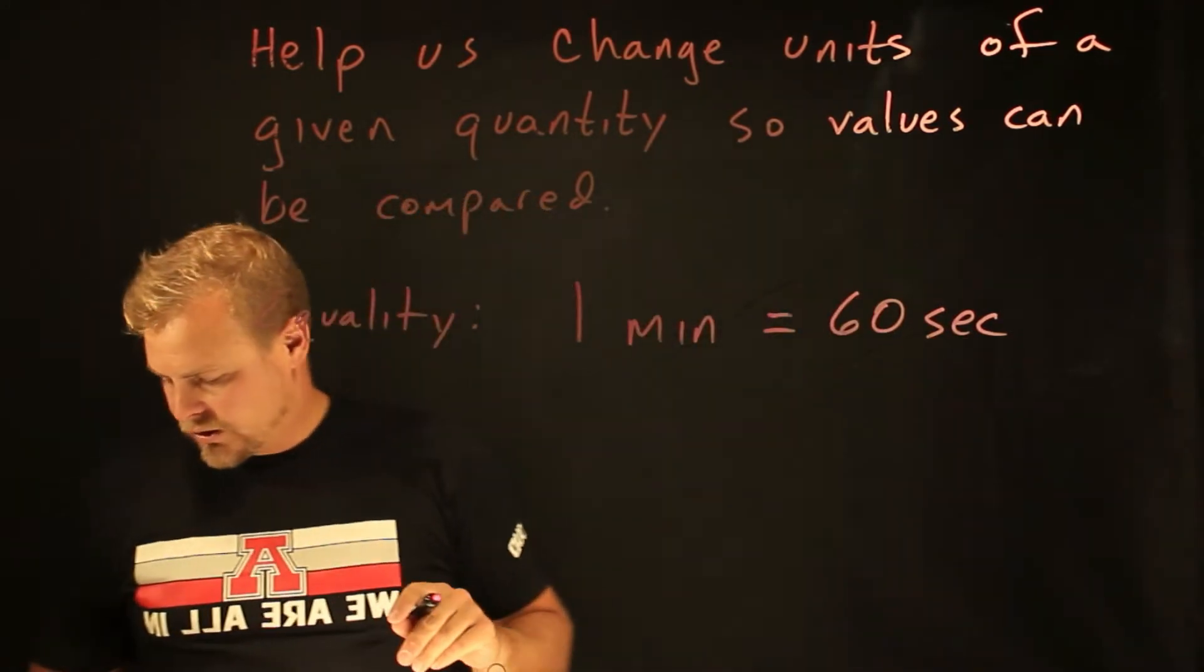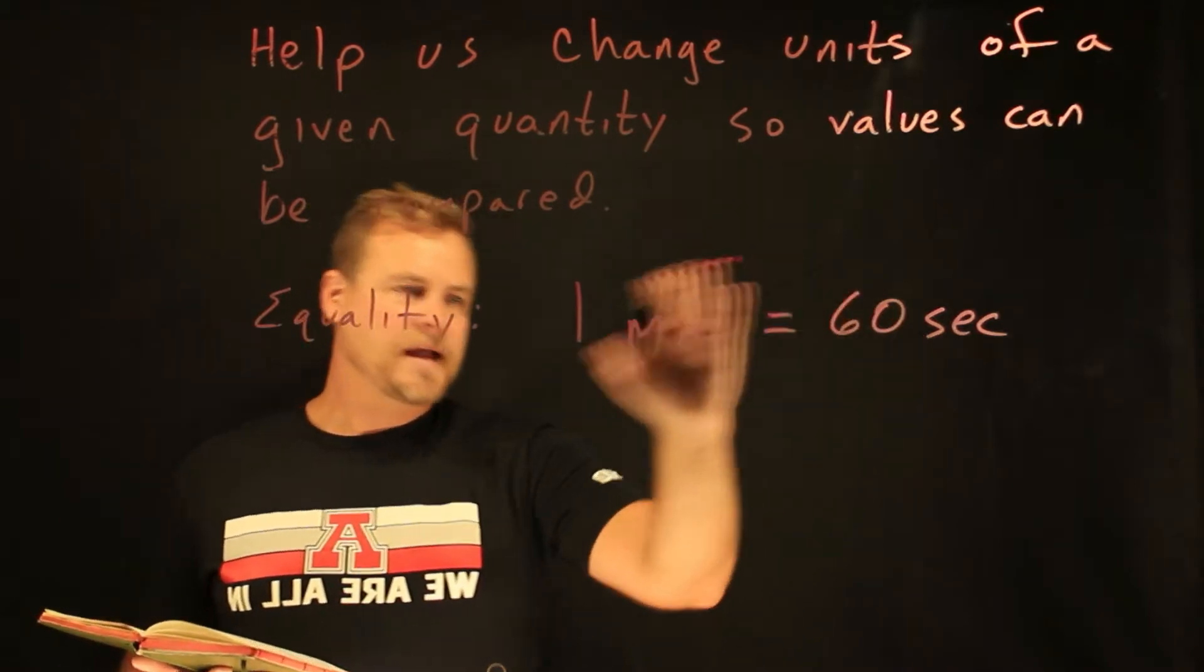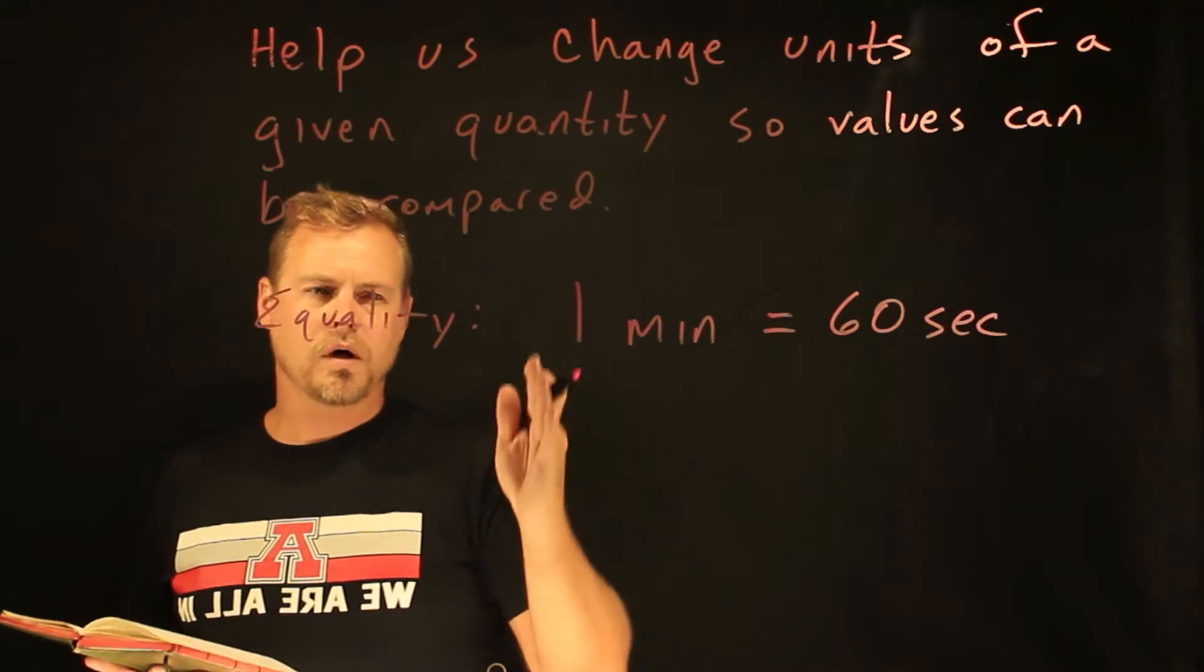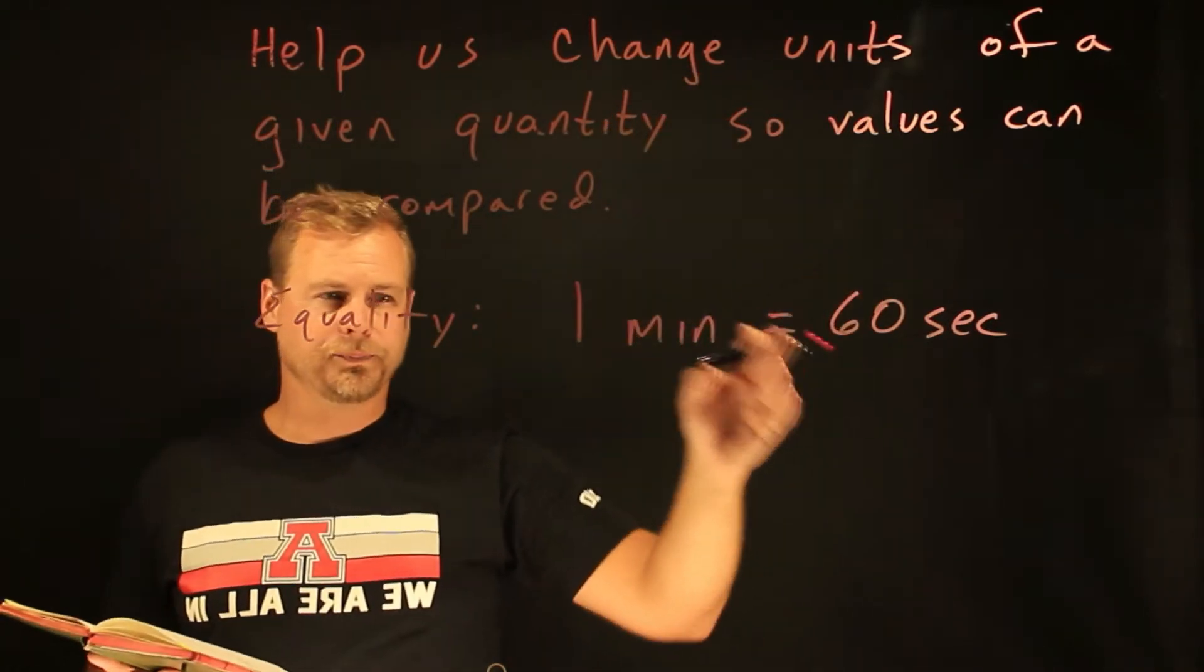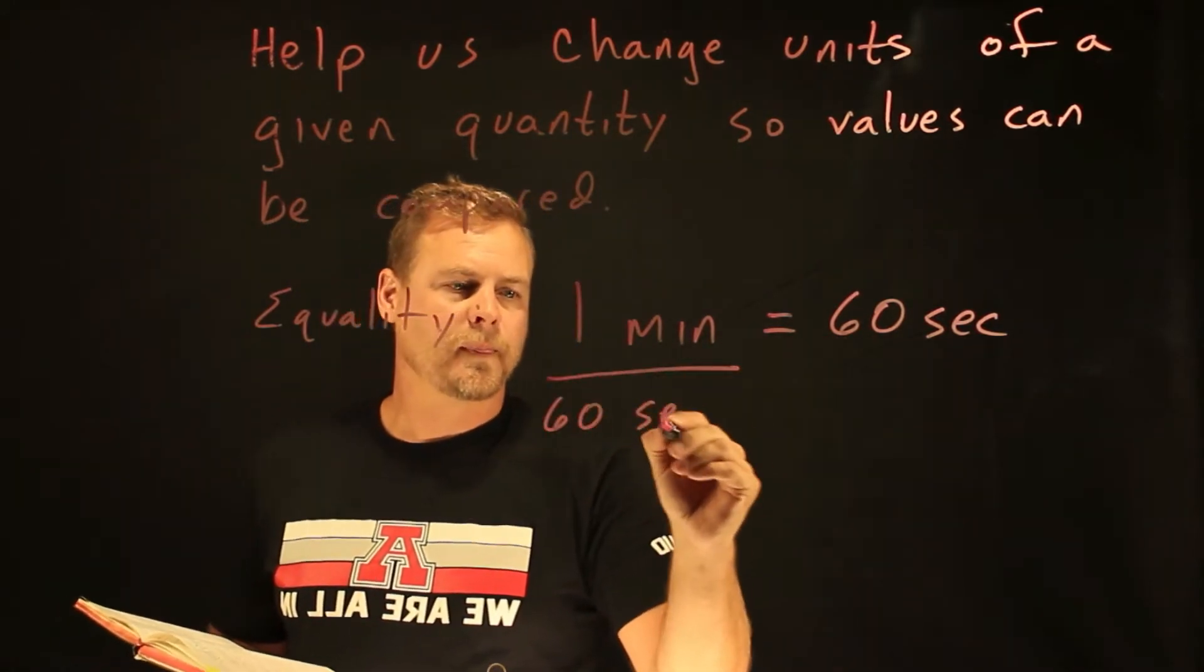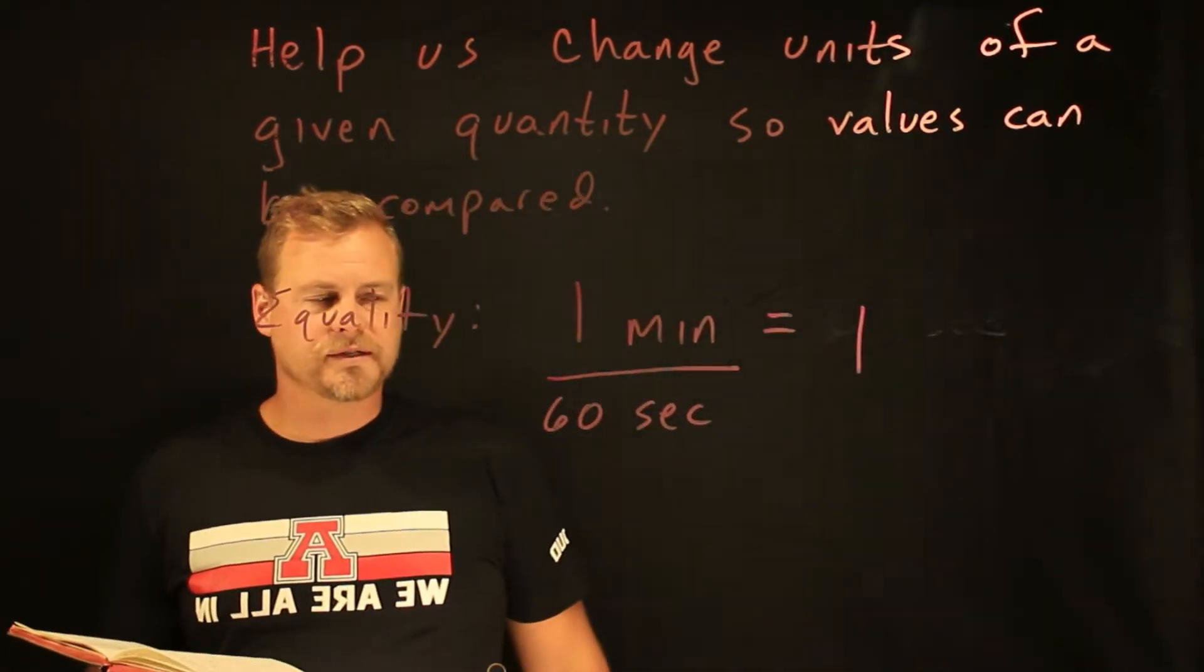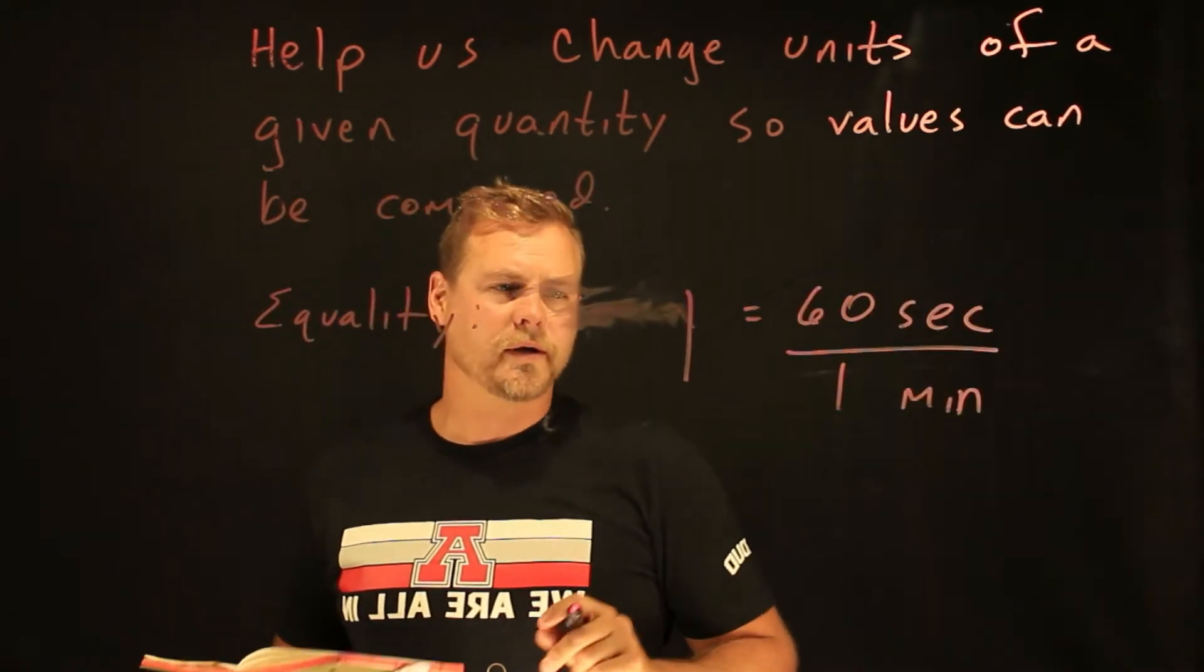And so we can use these equalities by setting this thing equal to one and then plugging one anywhere that we need to change units from one to the other. And so what we do, so if I divide both sides by 60, I have an equality that one minute is equal to 60 seconds. Right. And I could have done it the other way. And that's still equal to one.